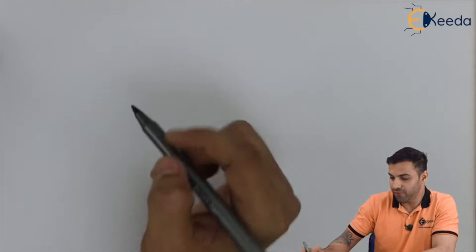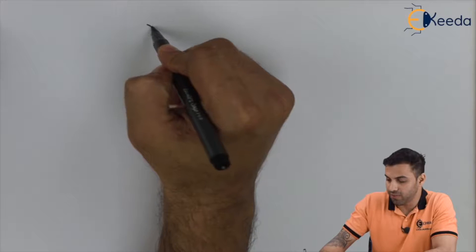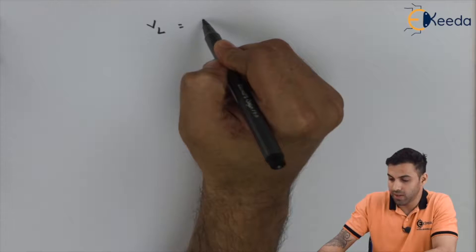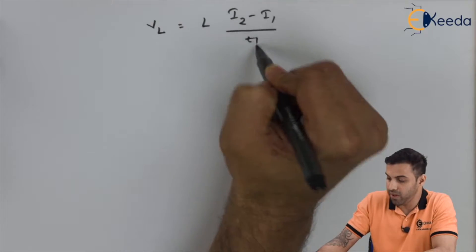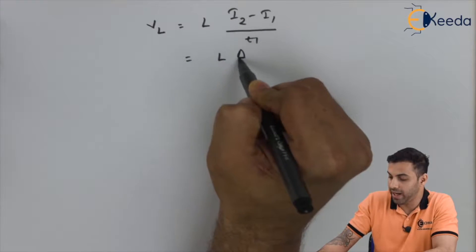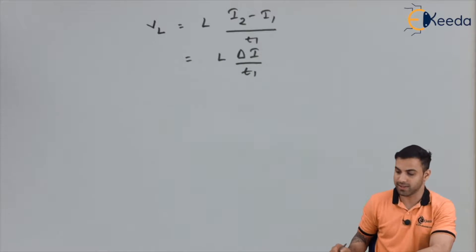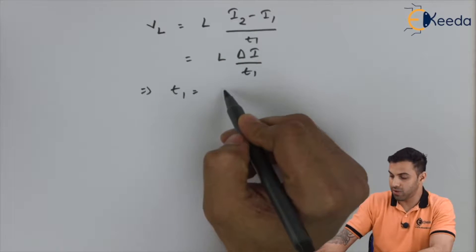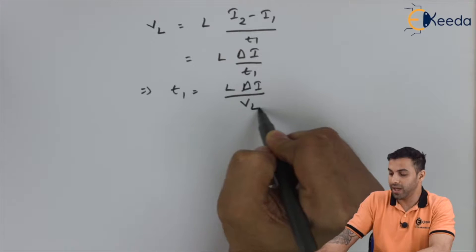Now let's calculate some mathematical parameters. The voltage across the inductor equals L·(I2 − I1) / t1, which equals L·ΔI / t1, as calculated in earlier lectures. Hence t1 equals L·ΔI / V_L.